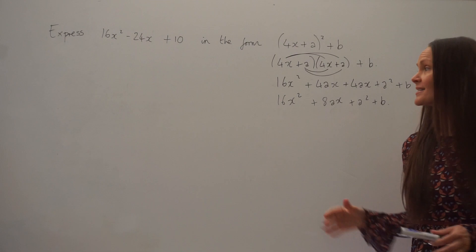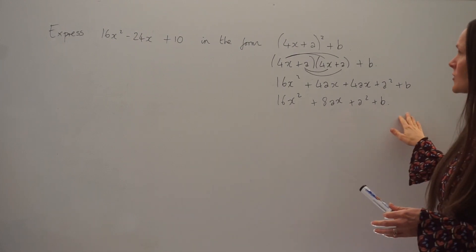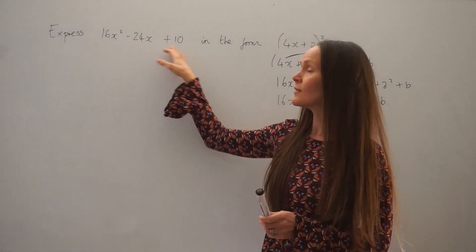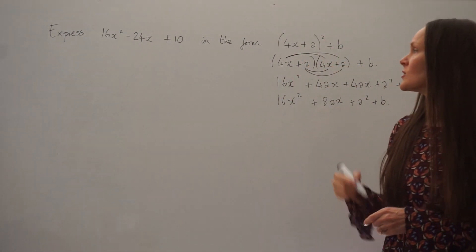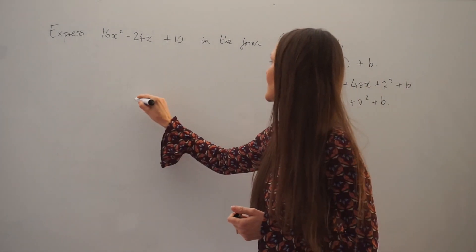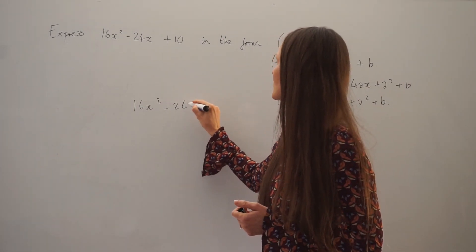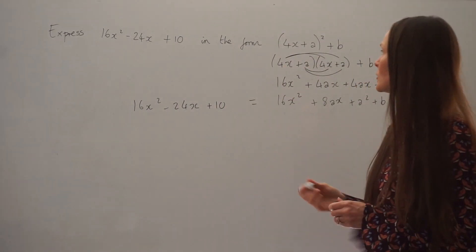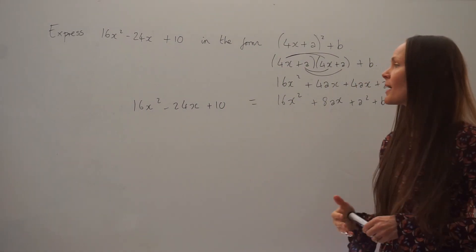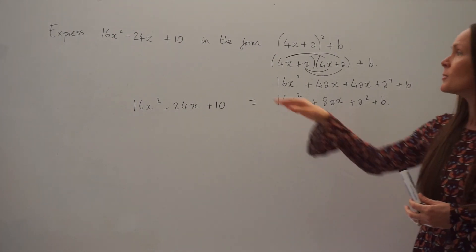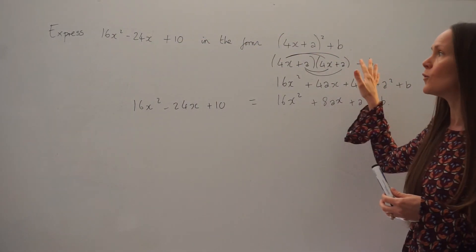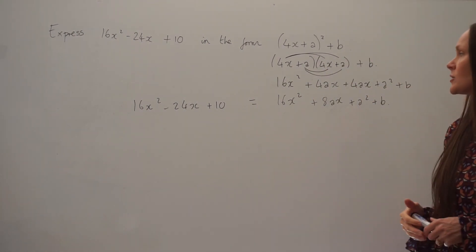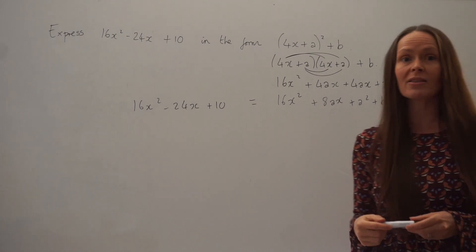What you have to do next is compare the coefficients of this expanded form with the quadratic as it was given at the beginning of the question. So I'm just going to write this out again: 16x squared minus 24x plus 10, and put it equal to the brackets we've just expanded and simplified. Because remember, we're just expressing this in a different form, so they're equal to each other.